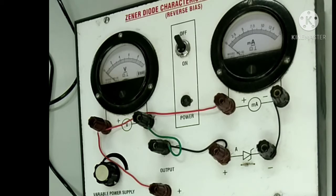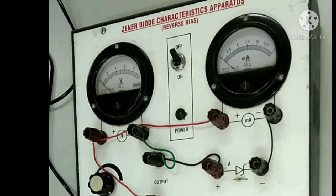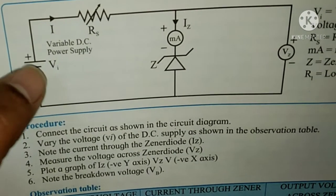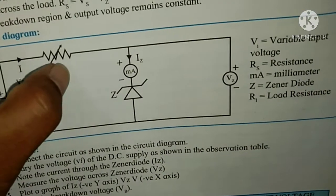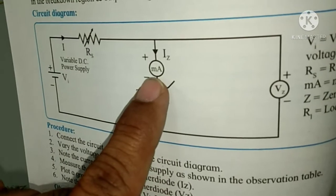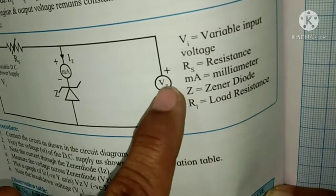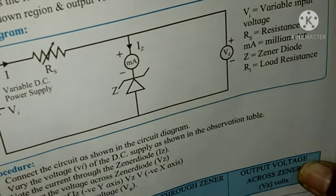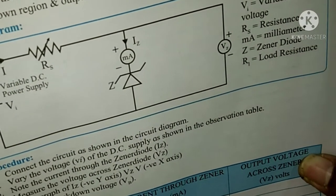Welcome student. Today we hope to perform the experiment of Zener diode characteristics. Here we want to study the characteristics of the Zener diode. The circuit diagram for the Zener diode includes a power supply, a series resistance, the Zener diode with its symbol, a milliammeter, and a voltmeter through which we measure the potential. This is the simple circuit diagram for the characteristics of the Zener diode.